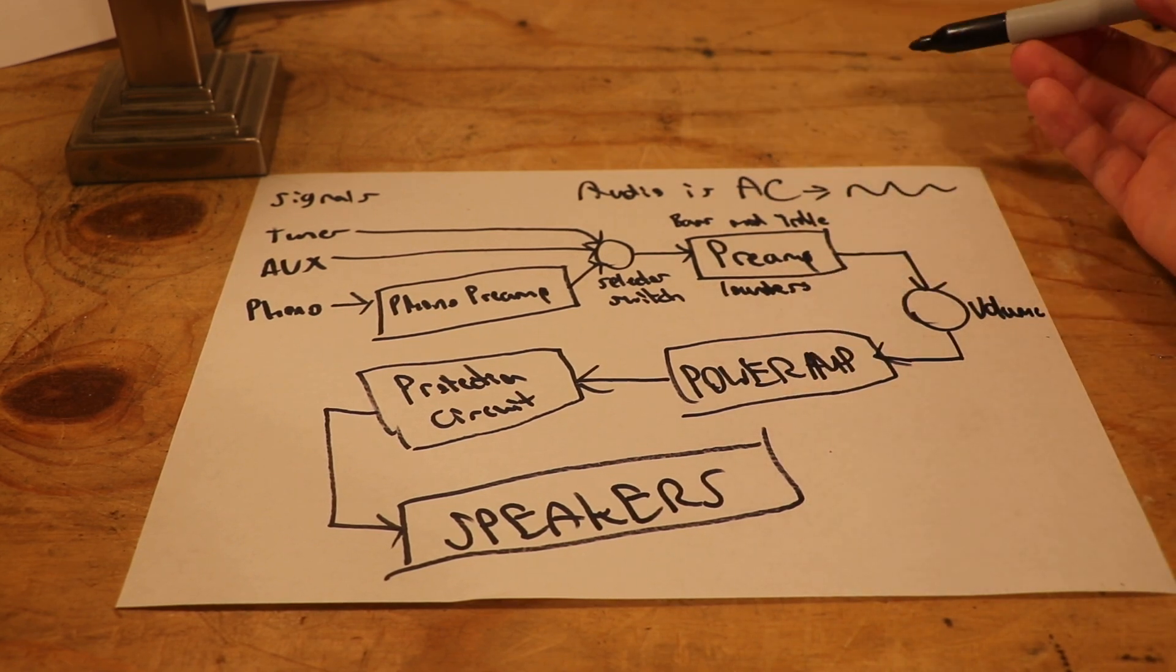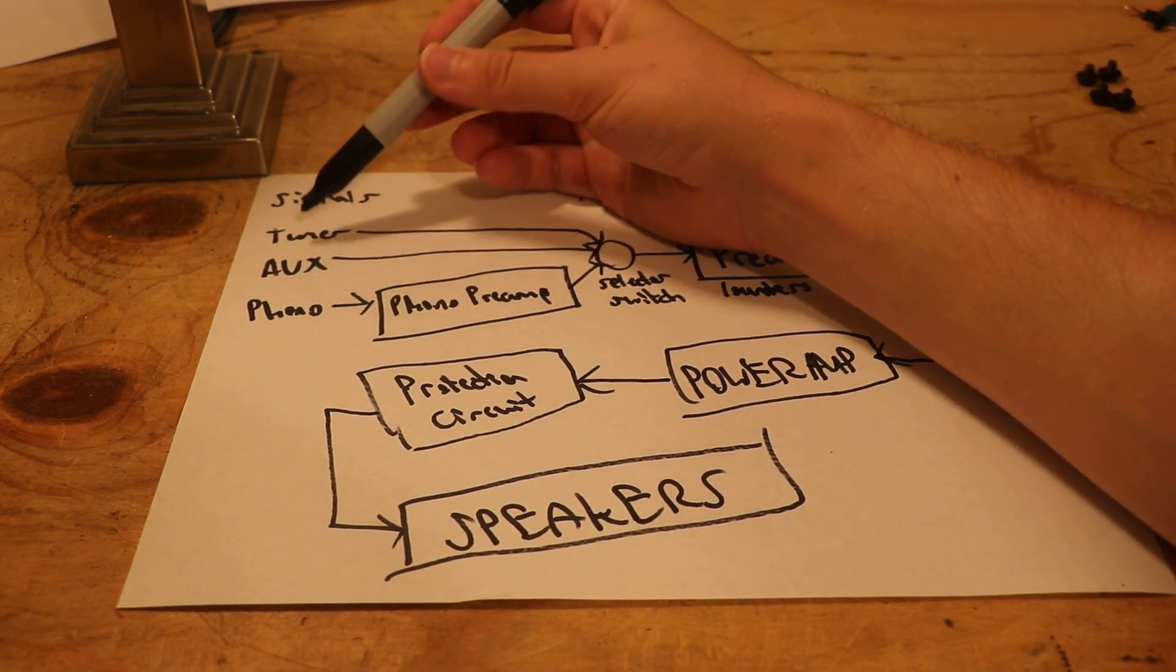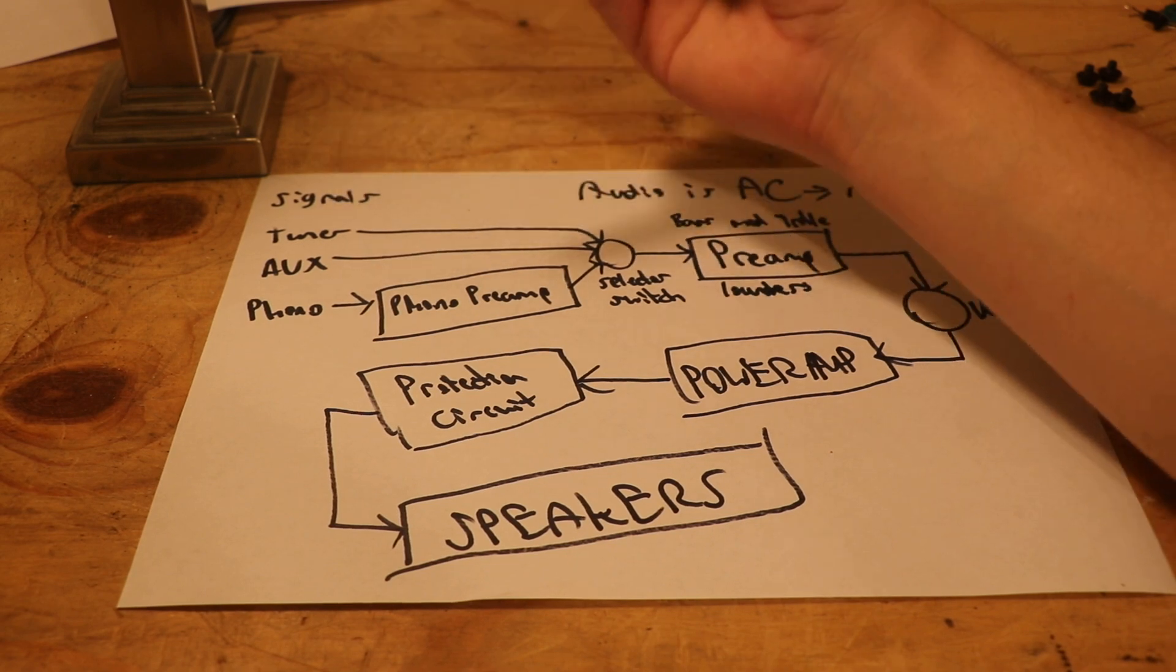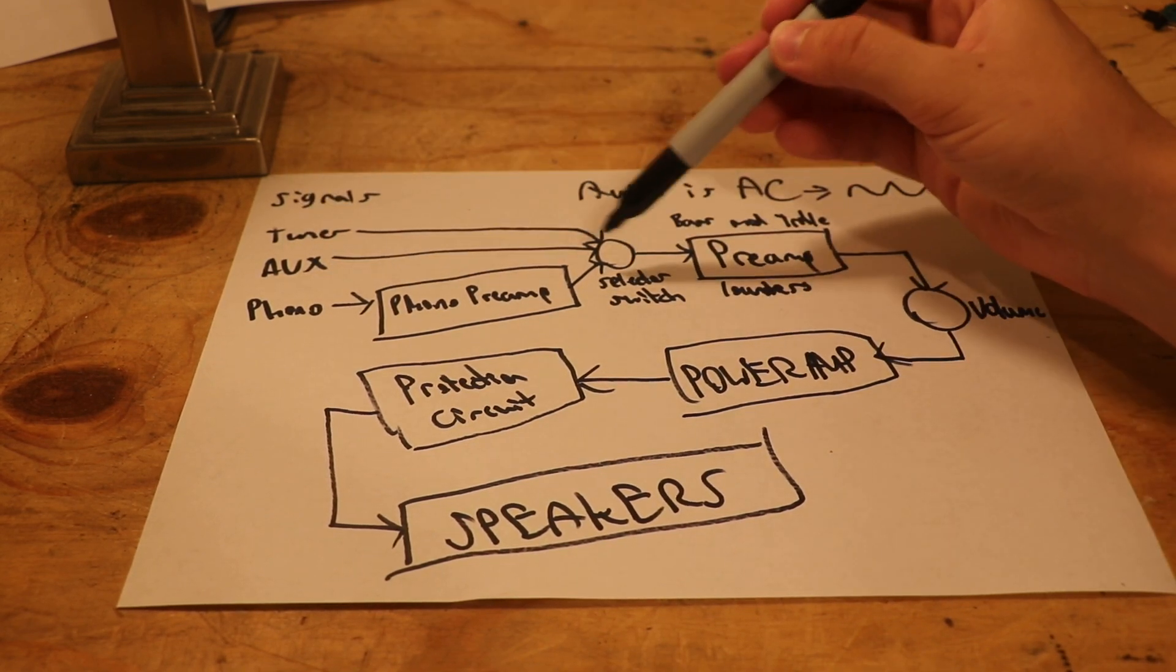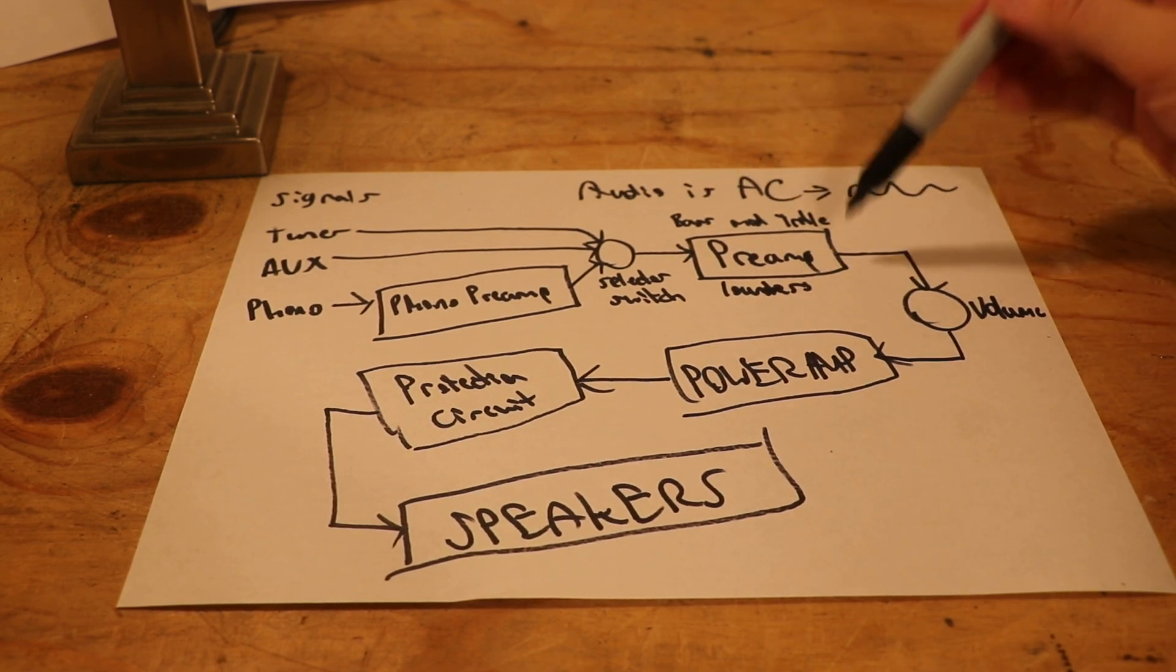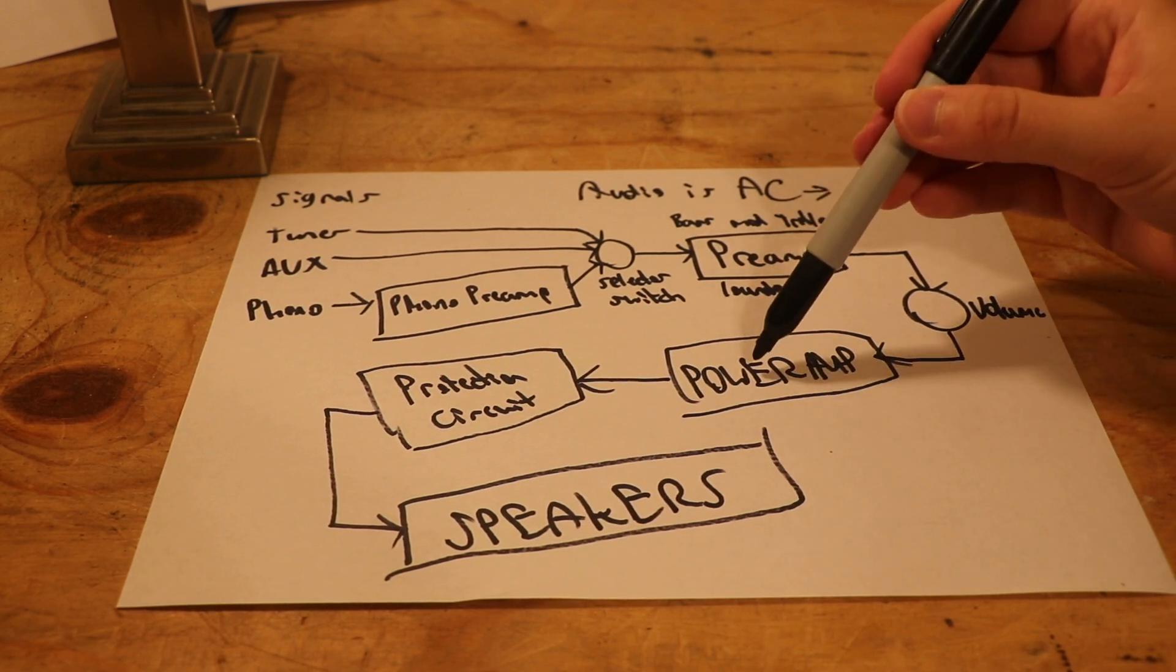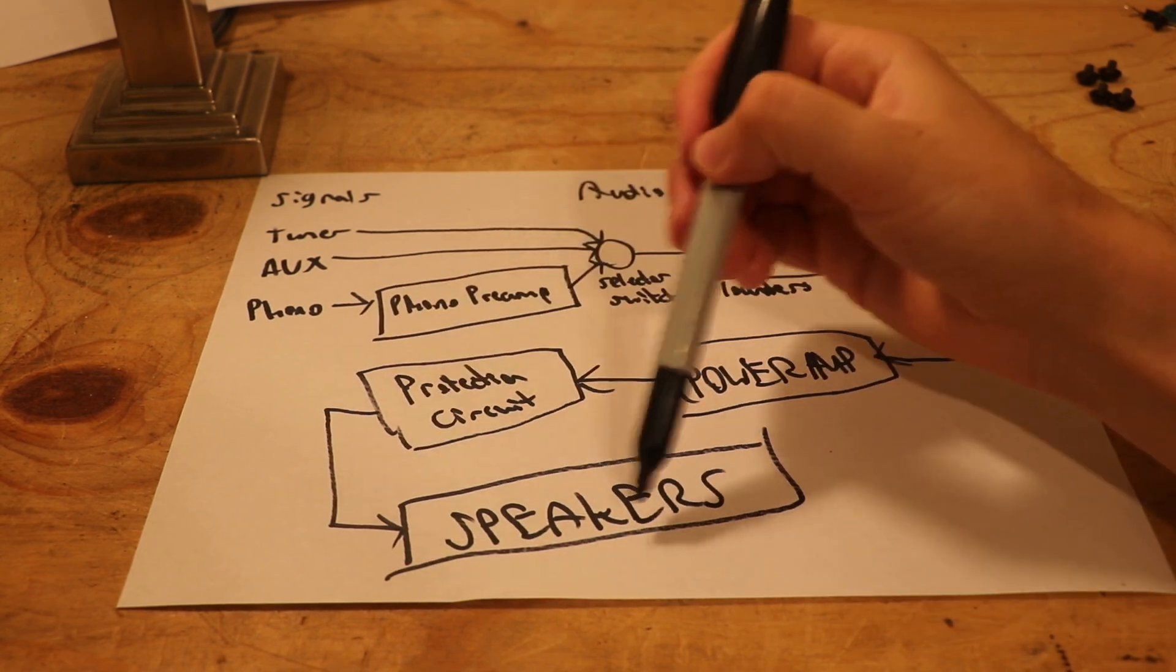So, basically, this is how a receiver works. You've got your signals. They could be anything. We're calling them tuner, aux, or phono. You could have tape, you could have CD, you could have whatever you want. That's kind of what aux covers here. You switch it to what you want. It goes through the preamp where it conditions the sound. And then that goes through a volume potentiometer to the power amp. And the power amp makes it loud. The protection circuit does its job, and then it sends it all to the speakers.